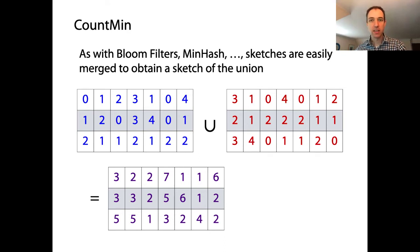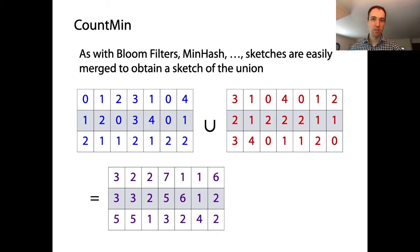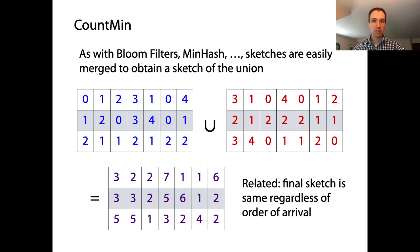A related fact is that if we're concerned with one fixed data set but we don't know what order the elements will arrive in, that order doesn't affect the final count min sketch. We might populate the sketch today with items in one order, and the next day with the same items in a different order — the final sketch will be the same regardless of input order.